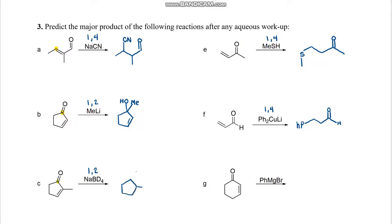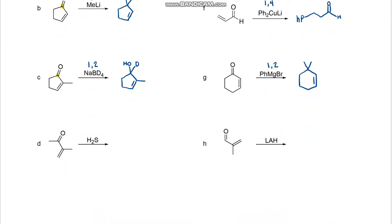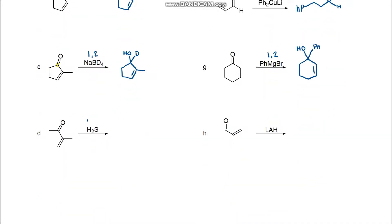For C, we have a hydride, so that will be a 1-2 addition. For G, we have a Grignard, that will be a 1-2 addition. For D, we have a hydrogen sulfide, that will be a 1-4 addition. And for H, we have a hydride, that will be a 1-2 addition.